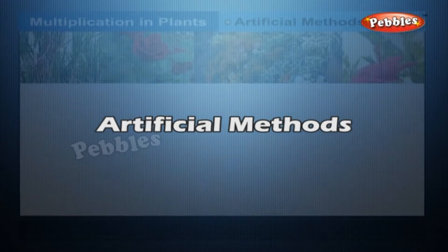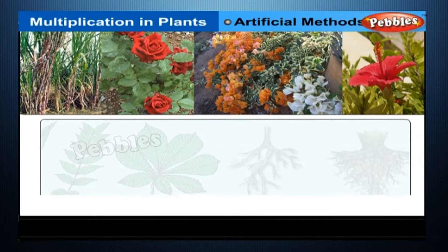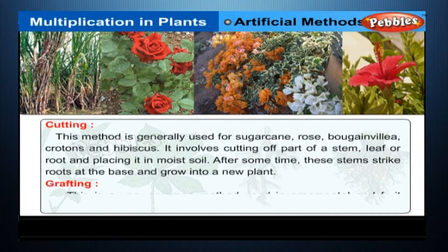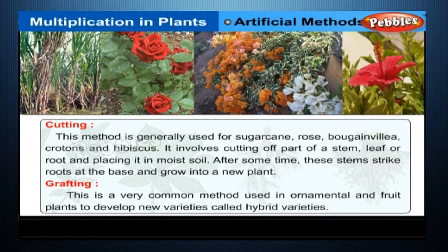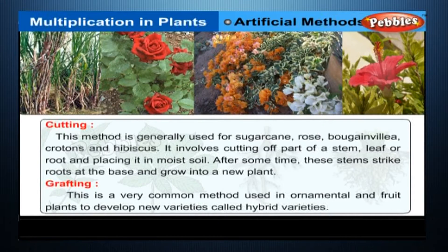Artificial methods: cutting is generally used for sugarcane, rose, bougainvillea, crotons and hibiscus. It involves cutting off part of a stem, leaf or root and placing it in moist soil. After some time, these stems strike roots at the base and grow into a new plant. Grafting is a very common method used in ornamental and fruit plants to develop new varieties called hybrid varieties.